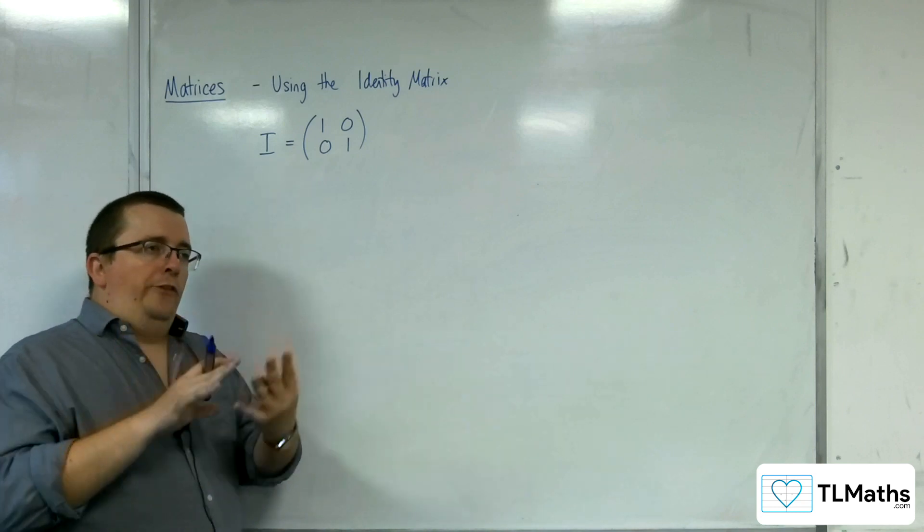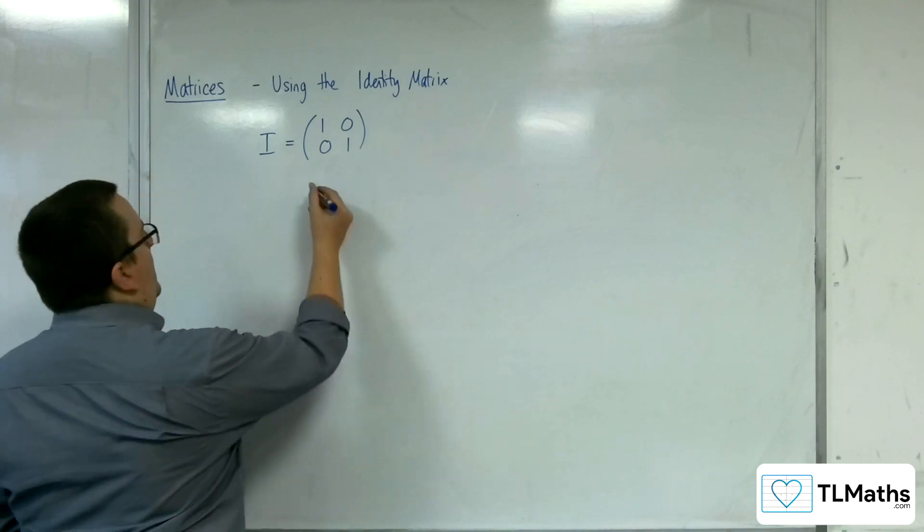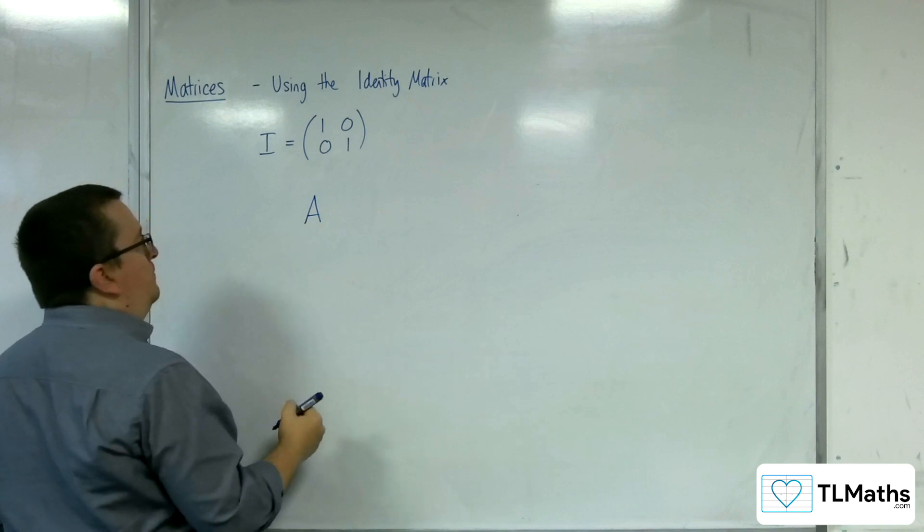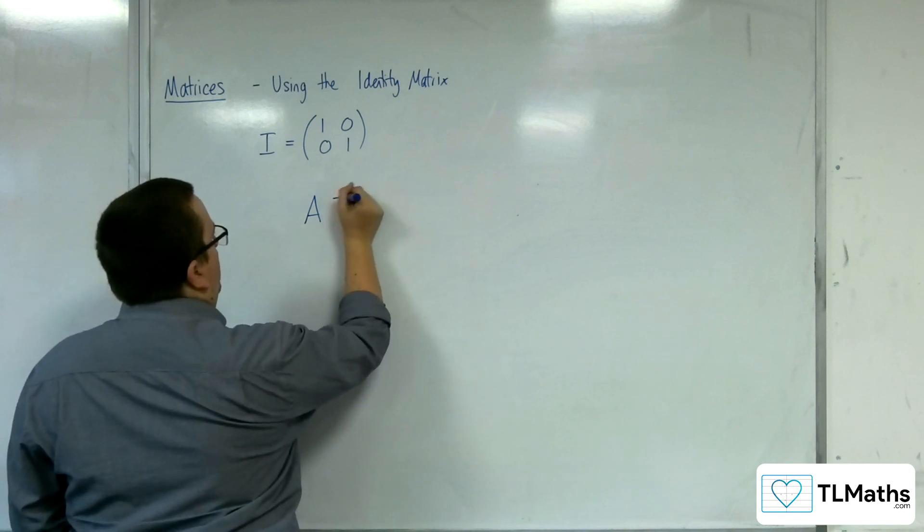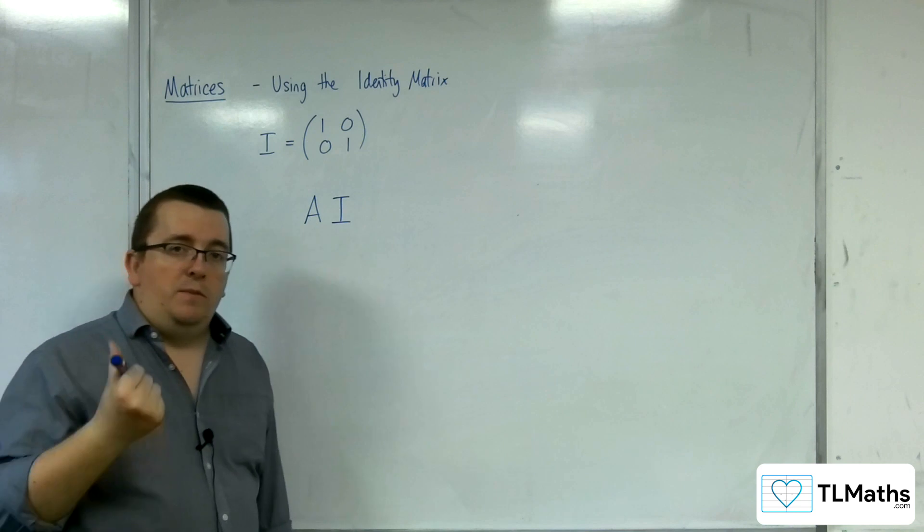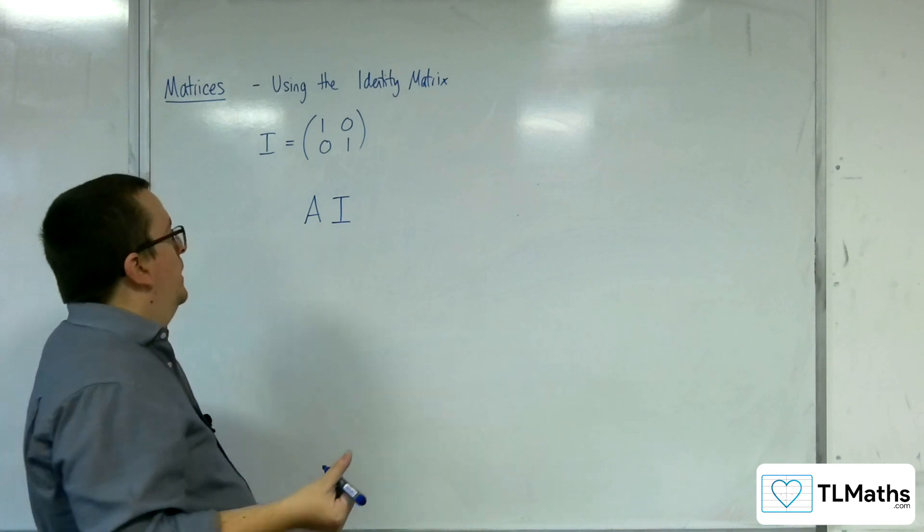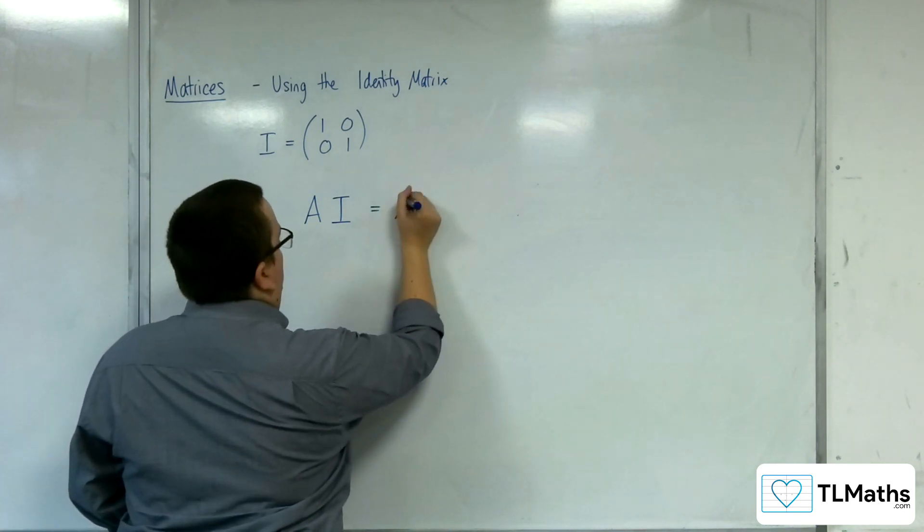And the consequence of this is that if you have another matrix, let's call it A, and you multiply A by the matrix I, then you get A.